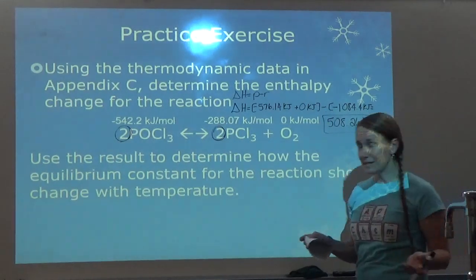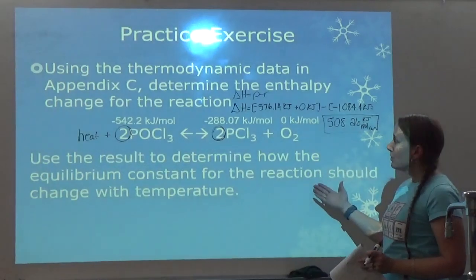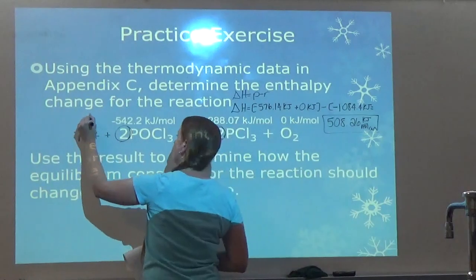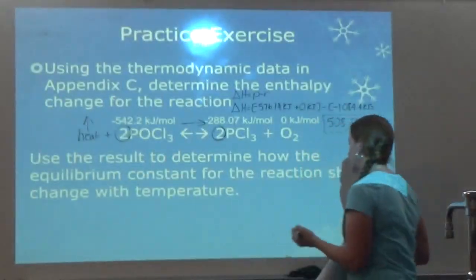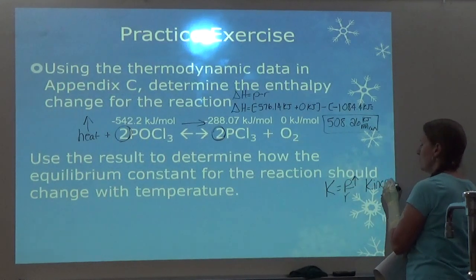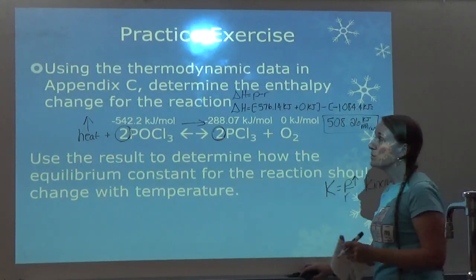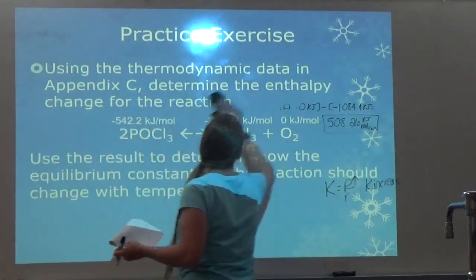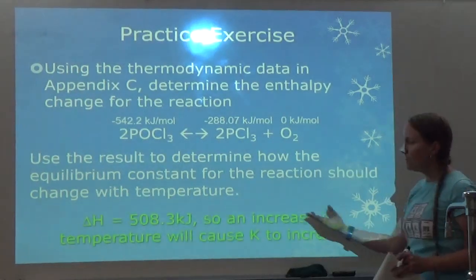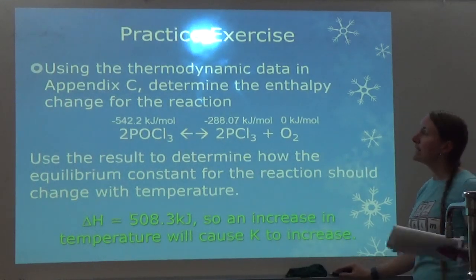Delta H is positive, so heat would be considered a reactant. It says: use the result to determine how the equilibrium constant should change with temperature. If I increase temperature, it's going to favor products. Since K is products over reactants, if I increase products, K would increase. K does not change based on initial amounts, but it does change with temperature. An increase in temperature will cause K to increase.